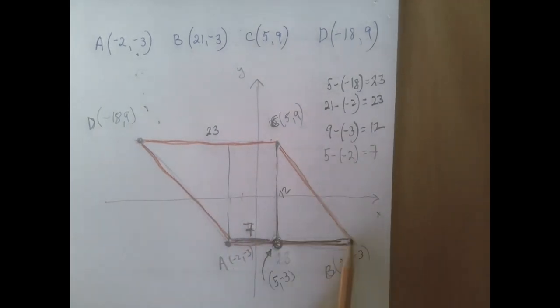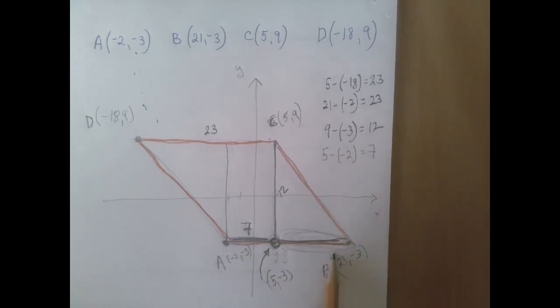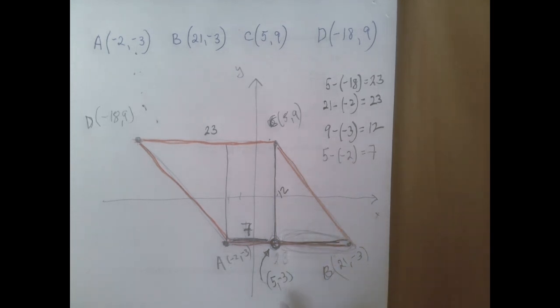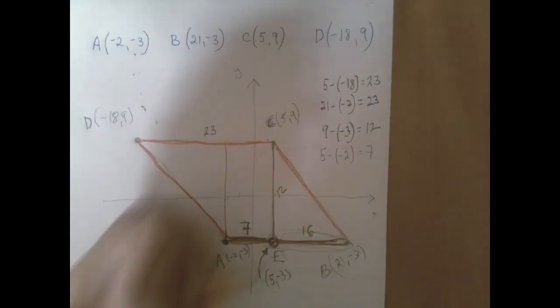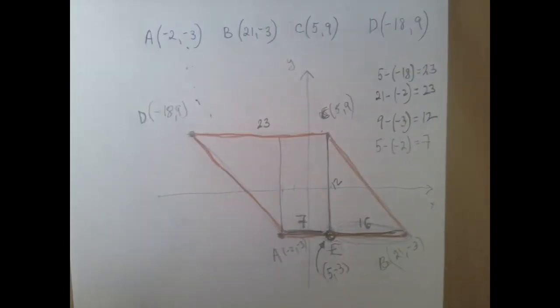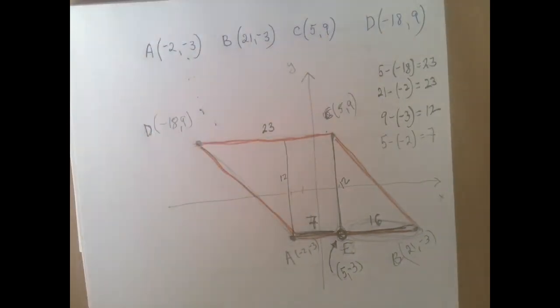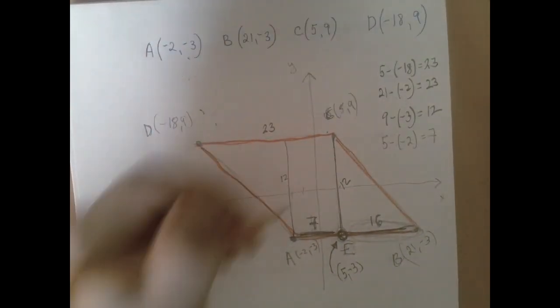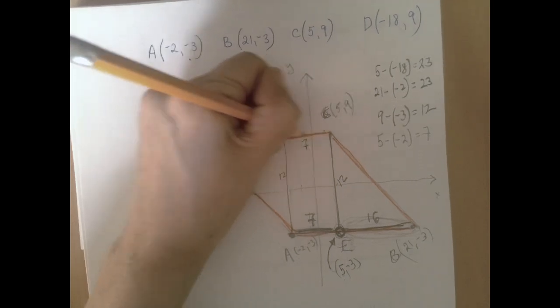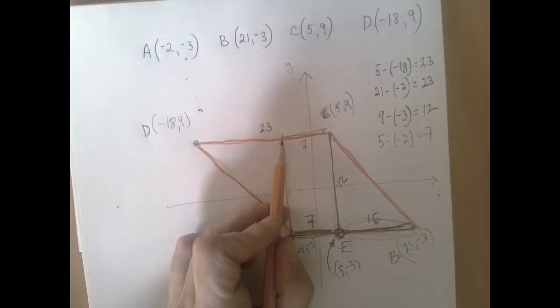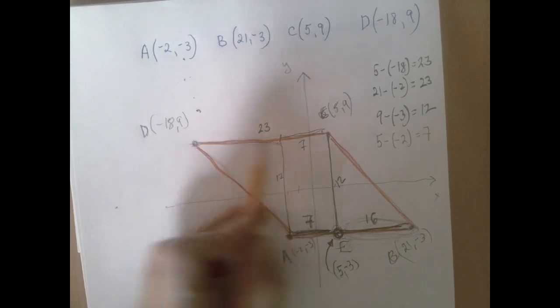Now we should already figure out the remaining because the whole line segment AB is 23 units long. 23 minus 7, that's 16, which is the same thing we get if we compare the x-coordinates. Coordinates go from 5 to 21. So this here is 16. Now this vertical line is clearly 12.